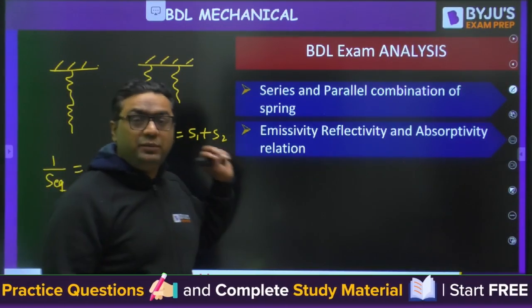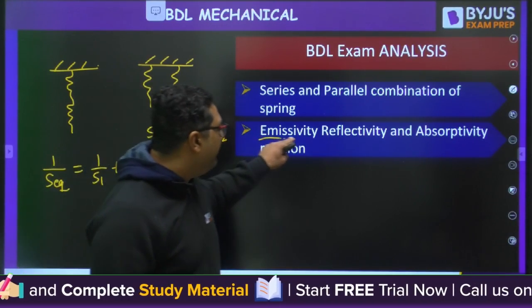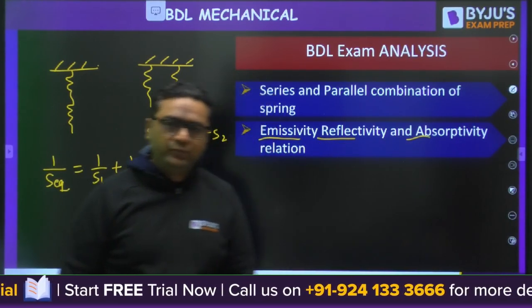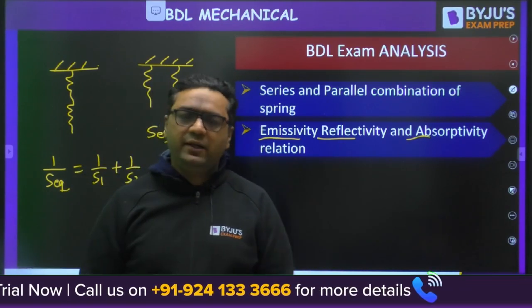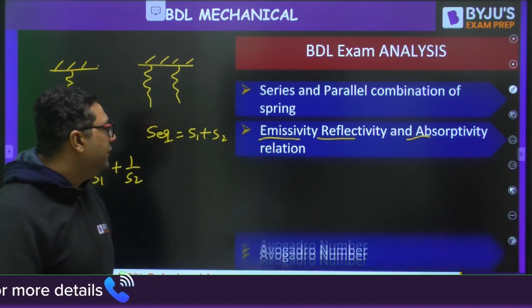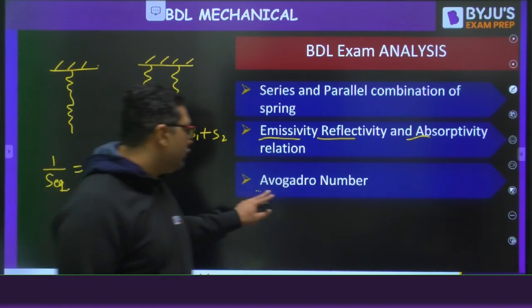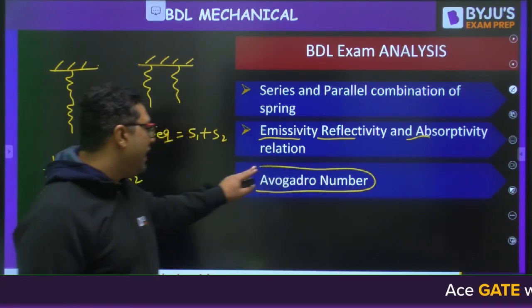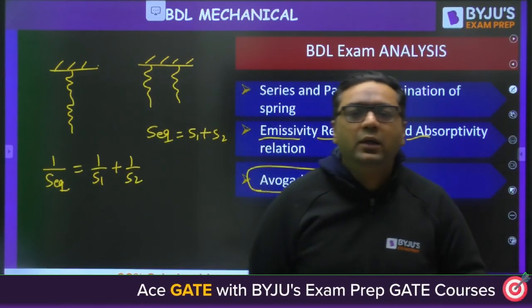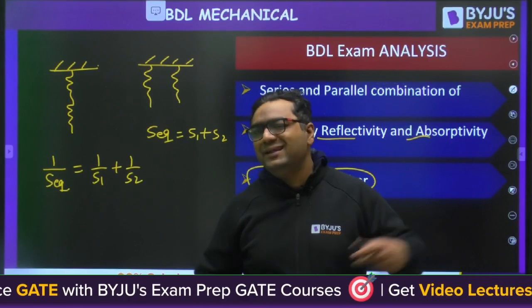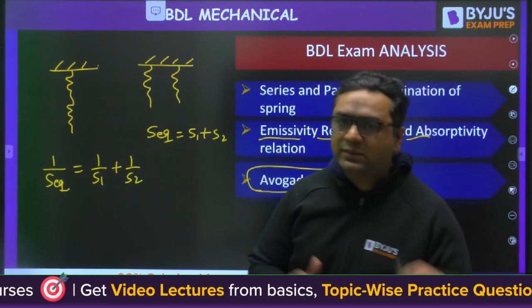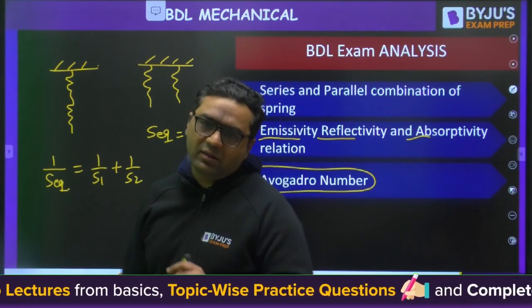One question was on the relationship between emissivity, reflectivity, and absorptivity — this is from heat transfer. Another question was related to Avogadro's number. This is all memory-based as told by the student. He mentioned the paper was easy and that questions from the thermal parts were relatively fewer in number.